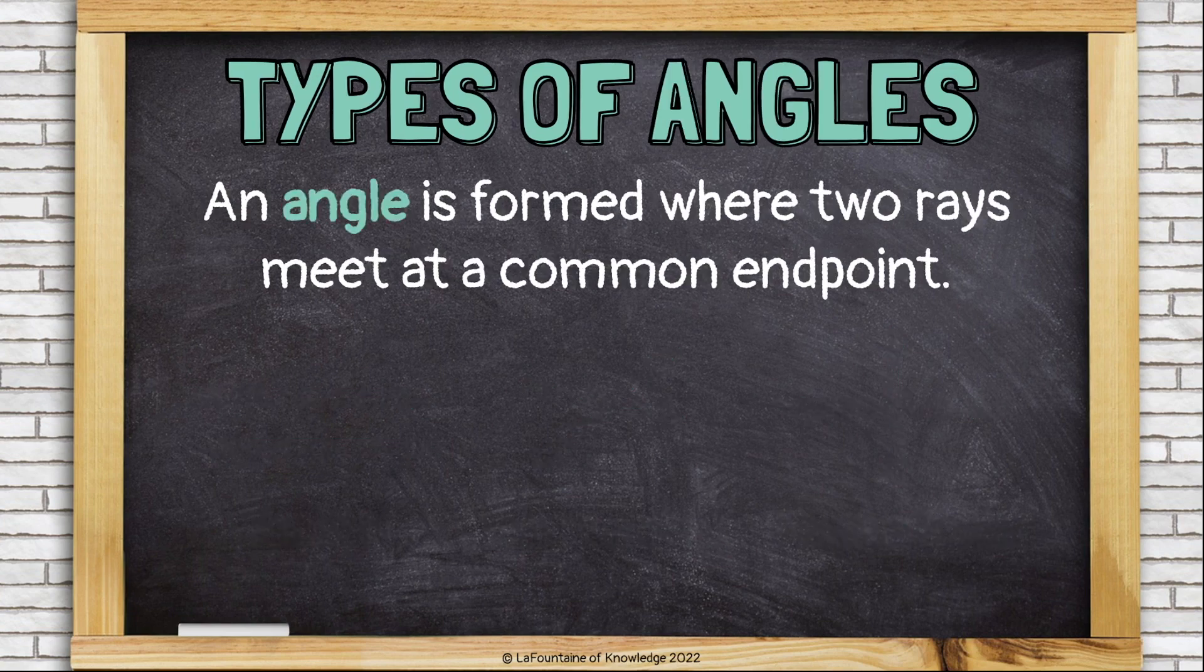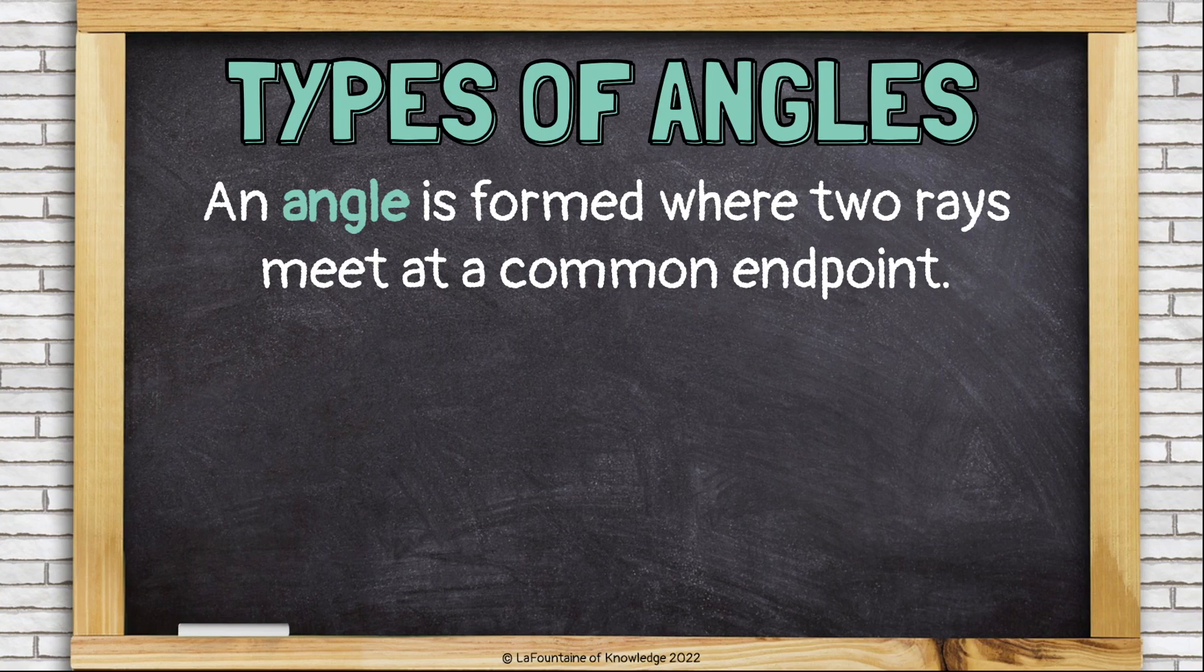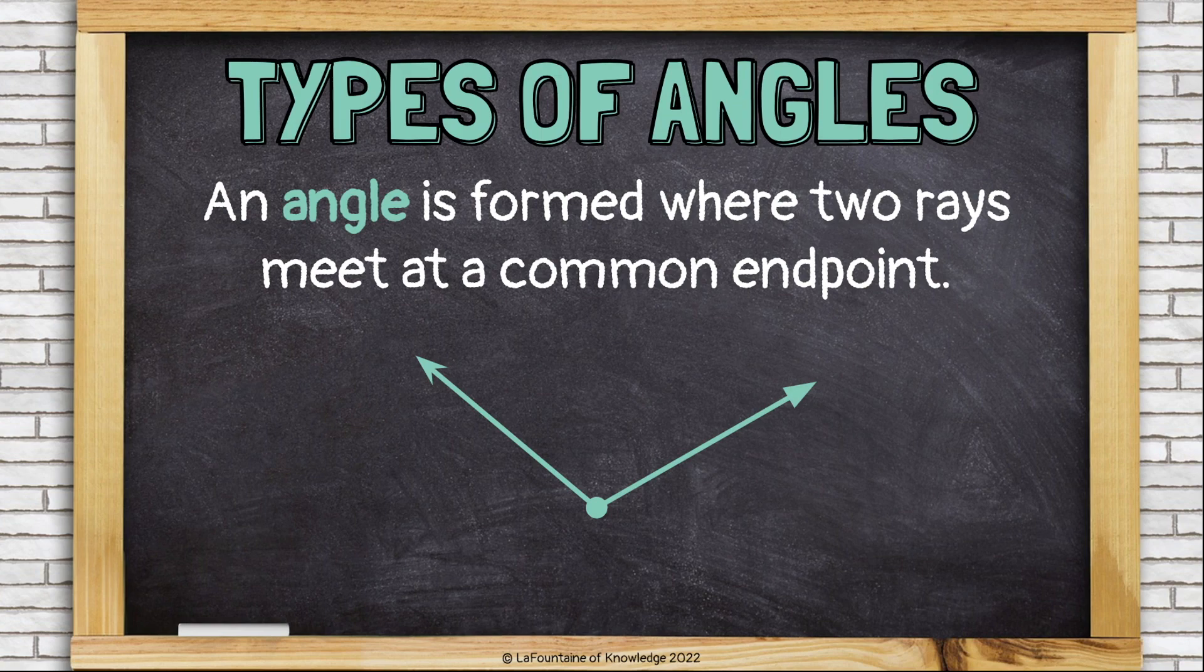An angle is formed where two rays meet at a common endpoint. So here's a ray. It has an endpoint on one side and an arrow on the other. Here's another ray, and they share their endpoint. This forms an angle.